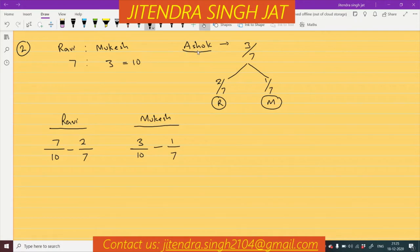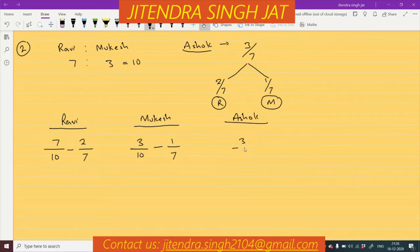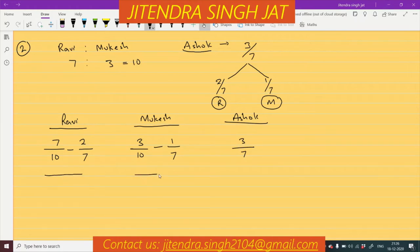What is Ashok's share? Ashok's share is 3/7 — it is given directly. We can write it directly, or we can add 2/7 plus 1/7, which gives us 3/7.